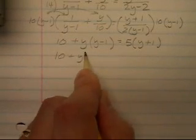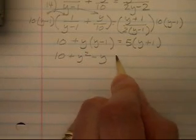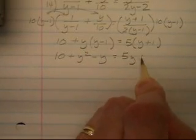And now all the fractions are gone. That's good. This will be 10 plus y squared minus y is equal to 5y plus 5.